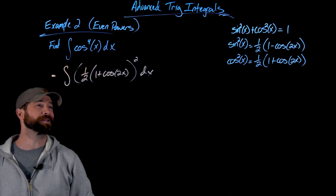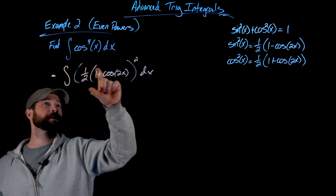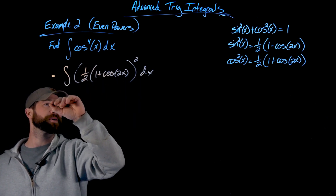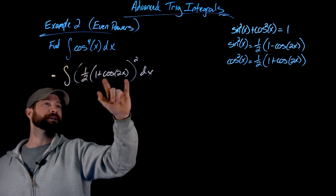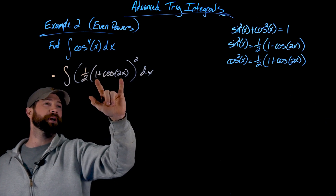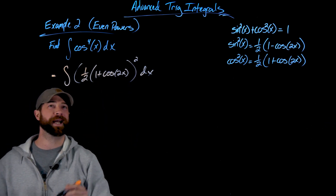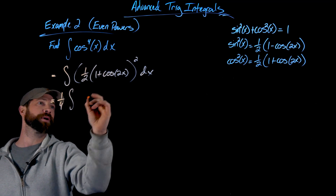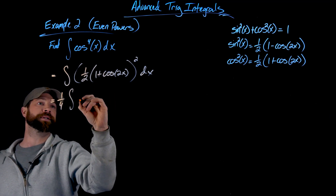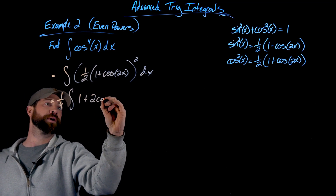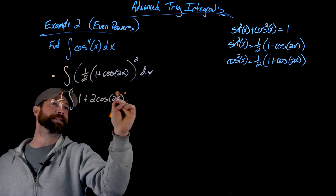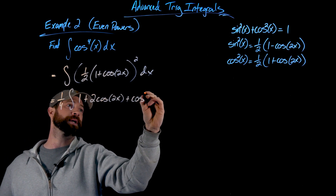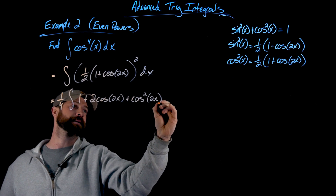Then I distribute this power: I apply the power to the one-half to make it one-fourth and pull that out front. Then I square the expression (1 plus cosine 2x), which is a foiling action. So I get one-fourth times the integral of 1 plus 2 cosine of 2x plus cosine squared of 2x, dx.